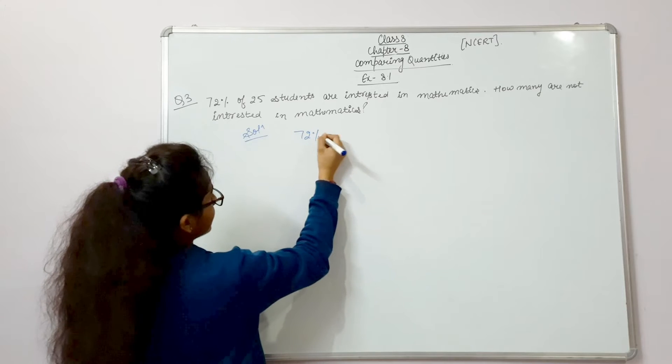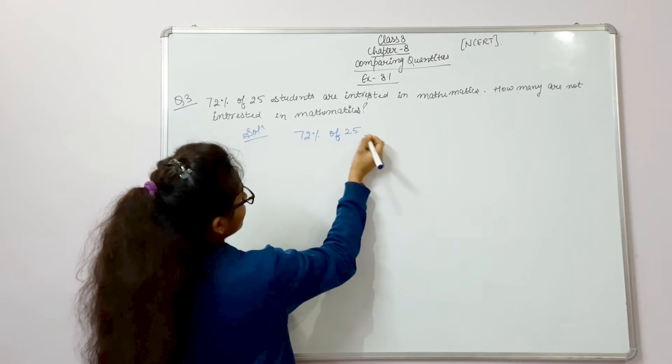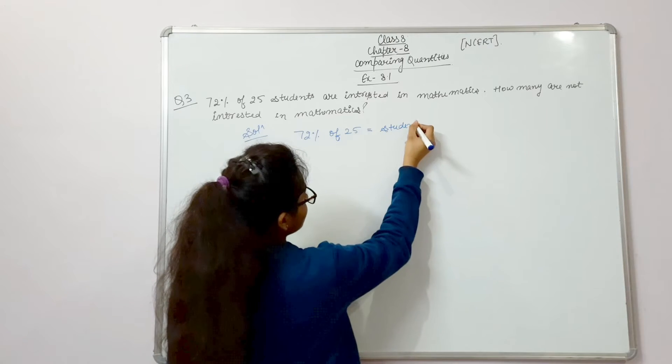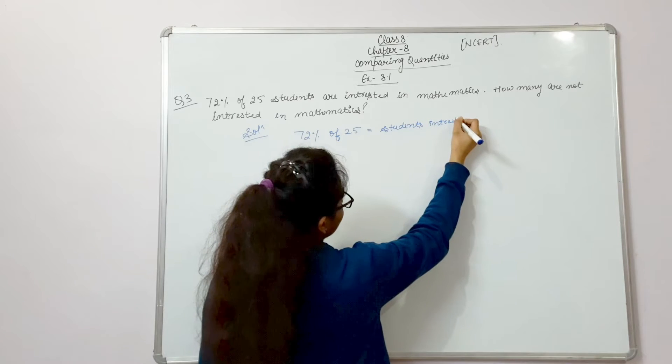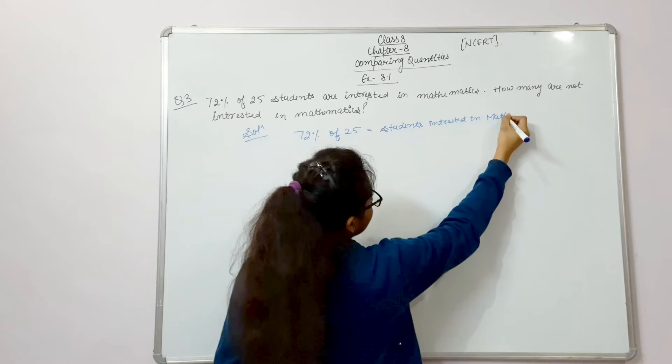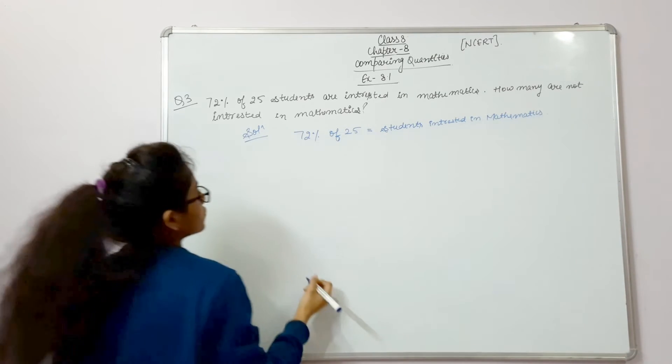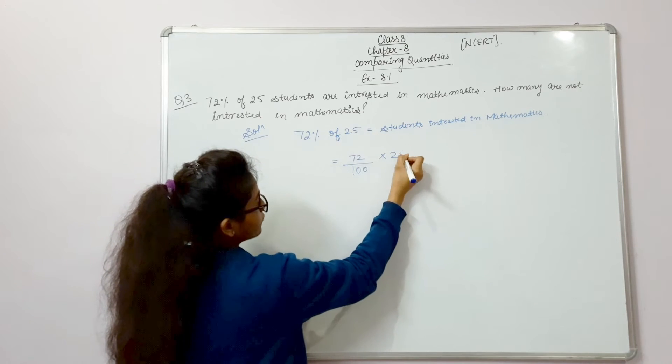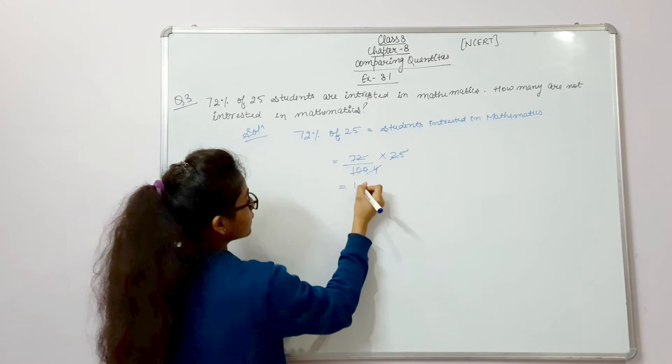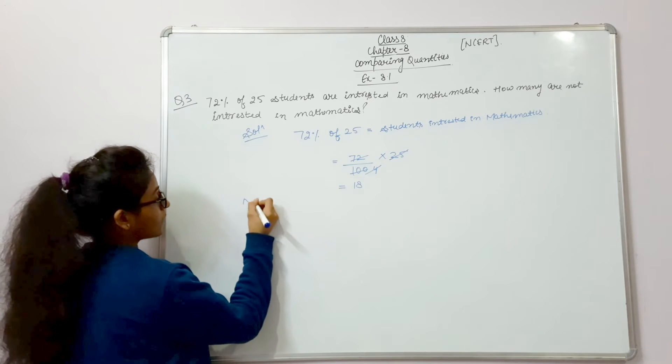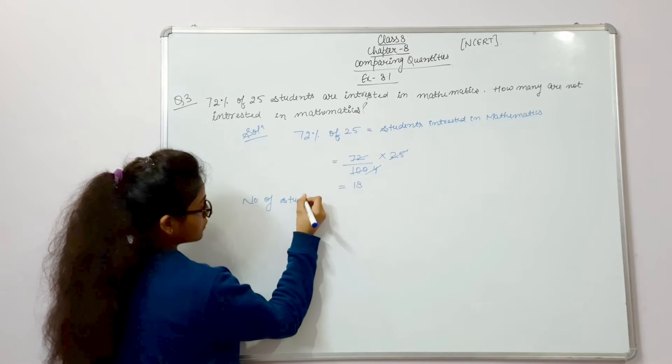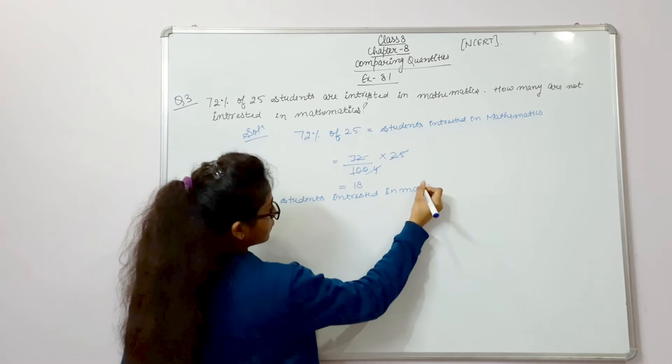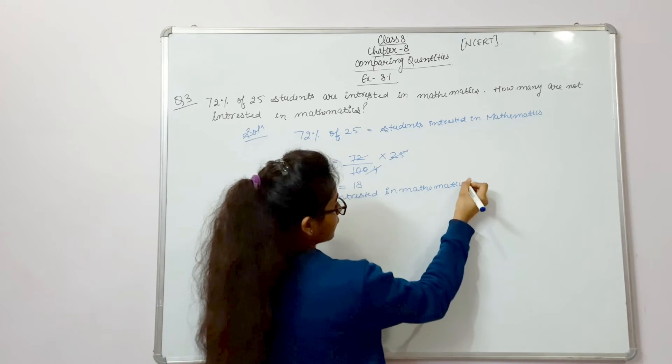72% of 25. Here we are finding students interested in mathematics. So what is the number of students interested in mathematics? It is 18.